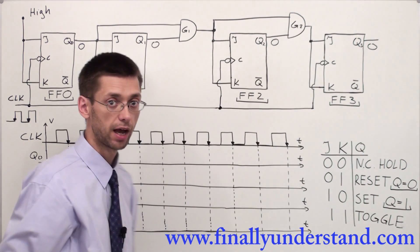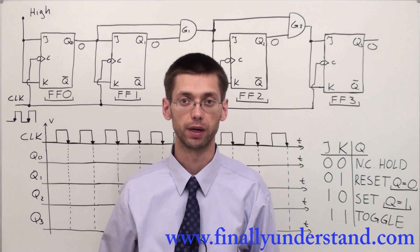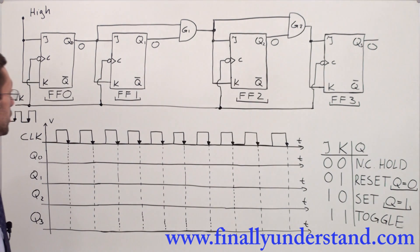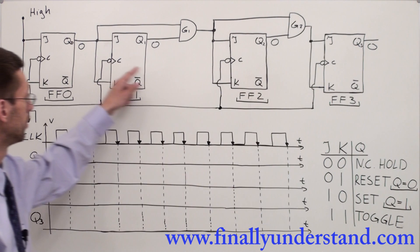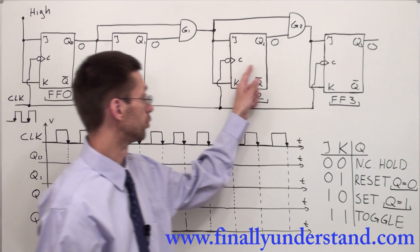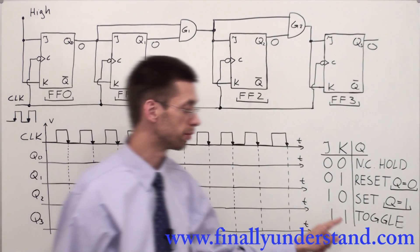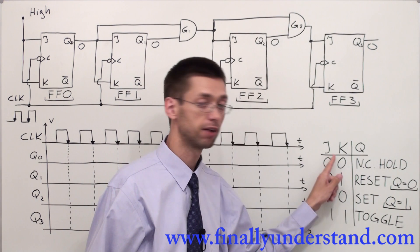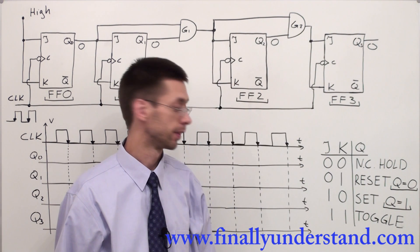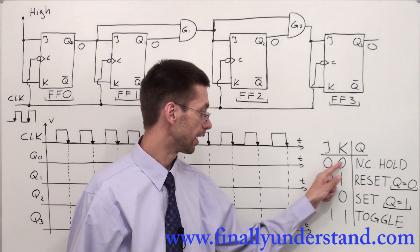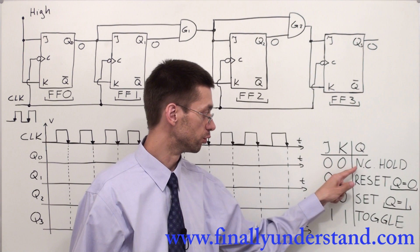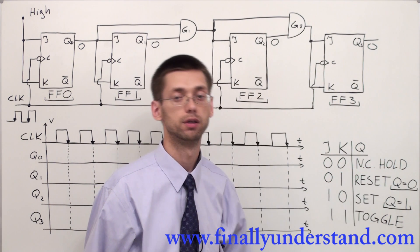The very first step: any time you analyze synchronous binary counters or decade counters, you are supposed to first set the modes of each flip-flop. In order to set the mode for each flip-flop, you need to remember the truth table of the JK flip-flop. Remember that any time J and K are both receiving zeros, you are going to set the flip-flop to no-change or hold mode.